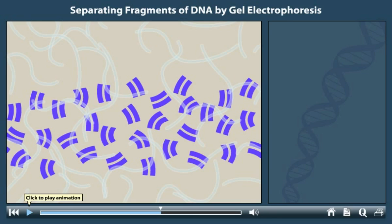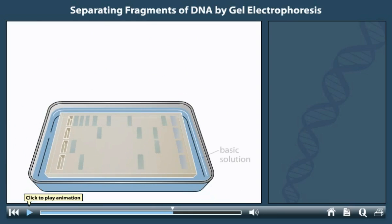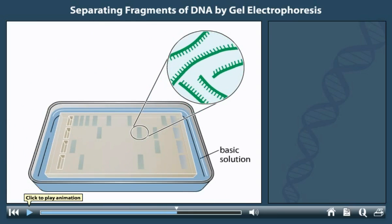In many cases, a researcher may want to determine which DNA fragment contains a DNA sequence of interest. To do this, the researcher prepares the DNA in the gel to make a copy, known as a blot. First, the gel is soaked in a basic solution, so that the double-stranded DNA denatures into single strands.